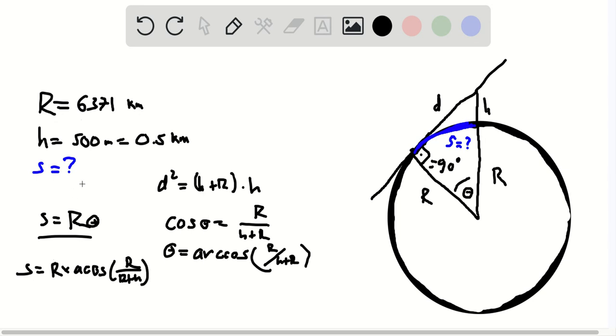And so plugging in the values that you're given, 500 meters or equivalently half a kilometer for the height of the tower and 6,371 kilometers for the radius of the earth.